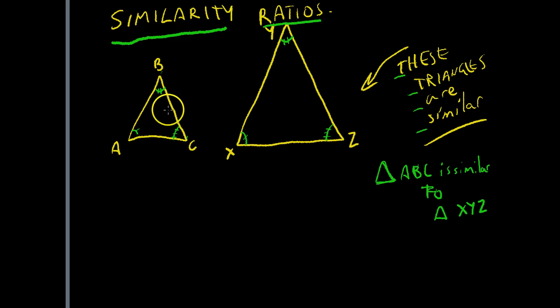Okay, now, if two triangles are similar, you're going to get what are called similarity ratios. That means that line AC divided by XZ. Okay, so line AC divided by line XZ, that's going to result in a ratio of some sort.